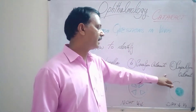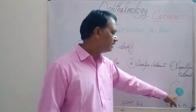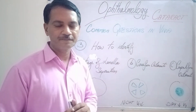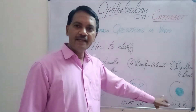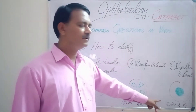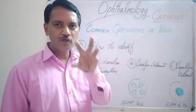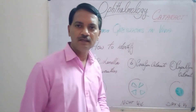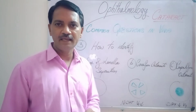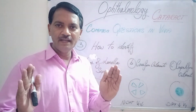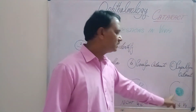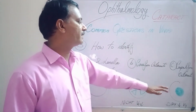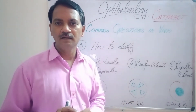Coming to the cupuliform cataract, you can see a central greyish-white opacity, which will be very clearly seen when the pupil is dilated. Here, the night vision will be better and day vision will be very much reduced. In the day time, because the pupil constricts due to light, light will not pass through this opacity, leading to decreased vision. In the night time, because light is very much less, the pupil dilates, so light is allowed to pass around this opacity, giving better vision. Even in this type of cataract, whenever a patient sees a light, there will be glare.